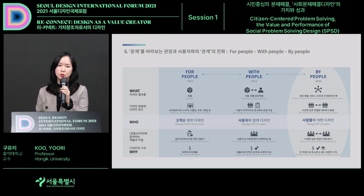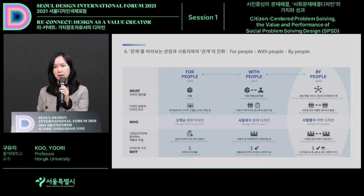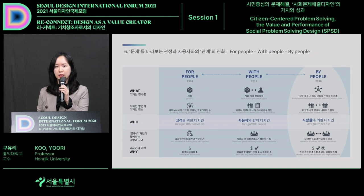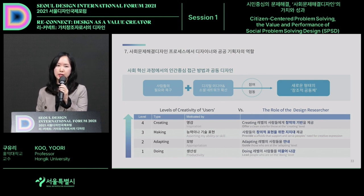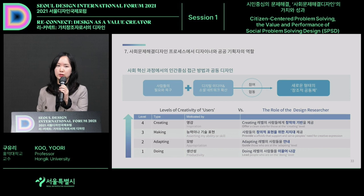Design outcomes in the future will not just be about products; they will be about establishing various relationships between people, products, and services. Design methodology will move from 'design for consumers' to 'design with users,' and in the future it will be a creative community 'designed by people.' In the process of social problem-solving and innovation, what is the role of the designer and public planner? They need to identify undiscovered needs and desires and make connections to create new types of community.